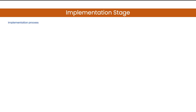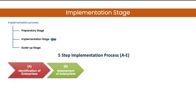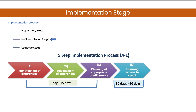Implementation Stage. This stage has five major steps: 1. Identification of Enterprises for Loans. 2. Assessment of Enterprises. 3. Planning of Appropriate Credit Source. 4. Ensuring Access to Credit. 5. Monitoring and Tracking of Enterprises.